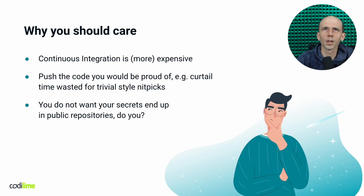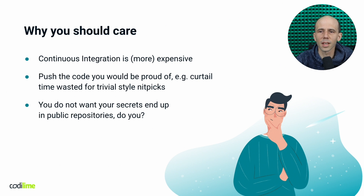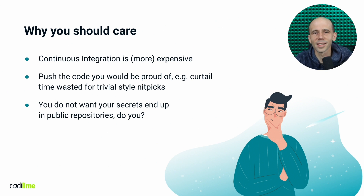So why should we even care? Why is that important? The first reason that comes to mind is that continuous integration is expensive. It always costs time and most of the time it costs money. So it seems quite sensible not to overuse it. And with that, the first idea which comes to mind is fixing maybe broken CI pipelines — for example, optimizing the order of steps.